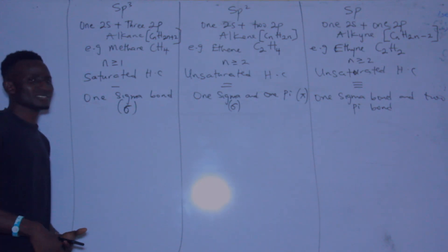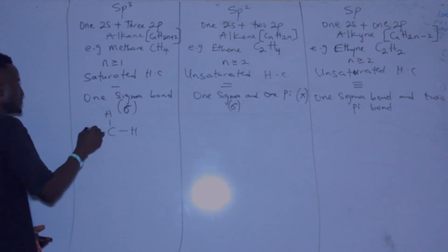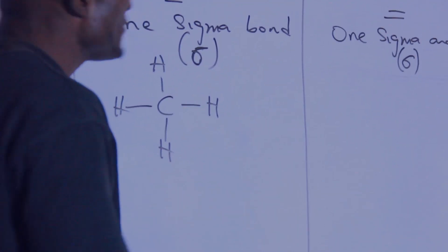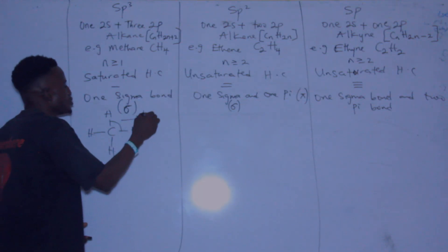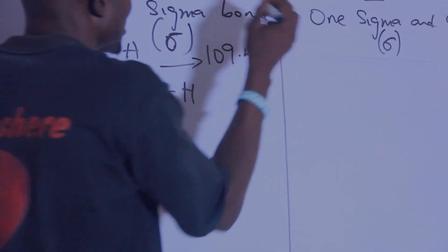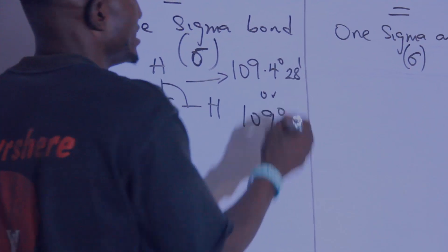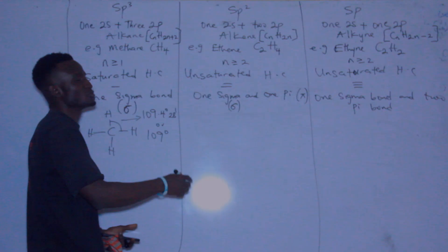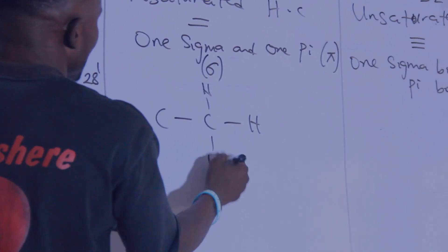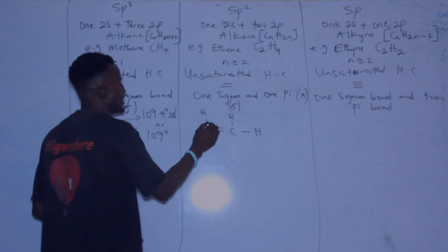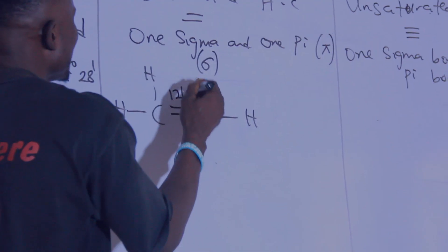If you check the structure of methane, which is sp³, it has a bond angle of 109.4 degrees 28 minutes, or approximately 109 degrees. If you check the alkene family, which is sp², the first member is ethene, and it has a bond angle of 120 degrees due to the presence of the double bond.